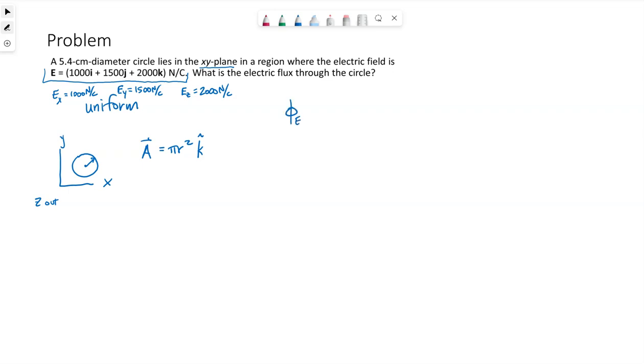So for our electric flux in a uniform electric field, we can calculate the flux by taking the electric field and dotting it with the area vector.